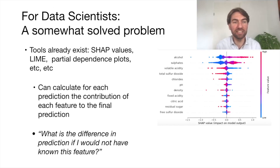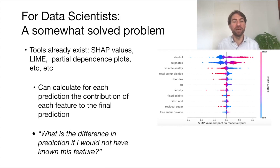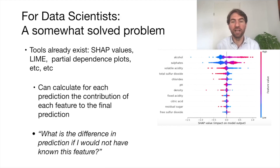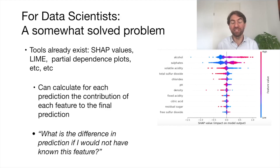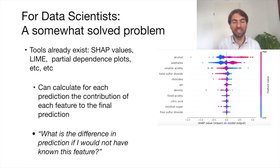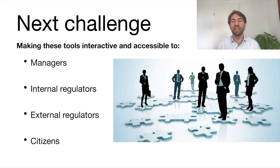For data scientists, I think this problem is mostly solved. These models are actually not black boxes. Nowadays, we have tools such as SHAP values, LIME values, and partial dependence plots to really show what the model is doing and how different features impact predictions, even individual predictions. However, in order to generate these kinds of plots and explanations, you usually need to be a data scientist fluent in Python and Jupyter notebooks. So the next step is building tools around it that make it easy for all the stakeholders — managers, internal regulators, external regulators, citizens — to use these tools in an interactive and accessible way.